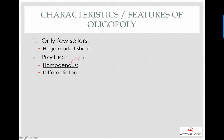The product type in oligopoly can be homogeneous or differentiated. Homogeneous goods are also seen in perfect competition, so both a PC firm and an oligopoly firm can produce homogeneous goods — this is common under cartel arrangements. For differentiated goods, products are not slightly but substantially differentiated, and this is the more common form.